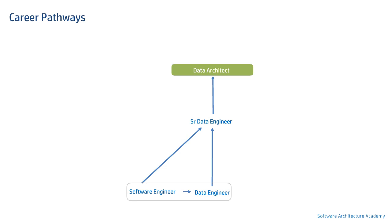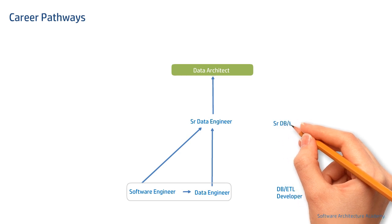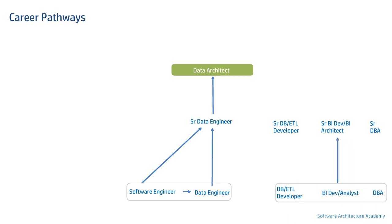Or a senior data engineer, if the person has been multiple years in the software engineering job family. A senior software engineer can also become a data architect if their focus area has been data. Another typical pathway is that of a database developer who specializes in writing SQL and PL/SQL scripts — they typically become a senior database developer and then a data architect. No one knows the fundamental concepts of database as well as a DBA.